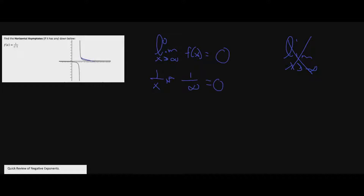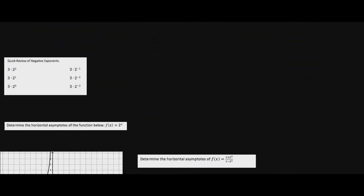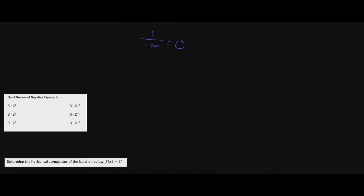We know this is going to approach zero, which you can see on the graph — approaching zero from the right as we approach infinity. From the left, we'll get negative infinity in the denominator, but the bottom is still getting bigger than the top, so it approaches zero from the negative side. We have a horizontal asymptote at y equals zero.